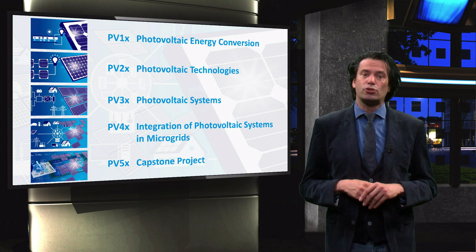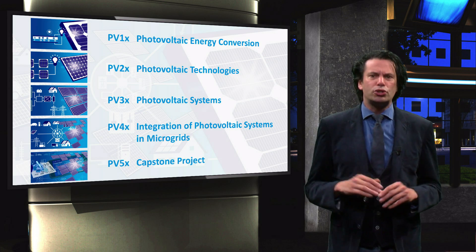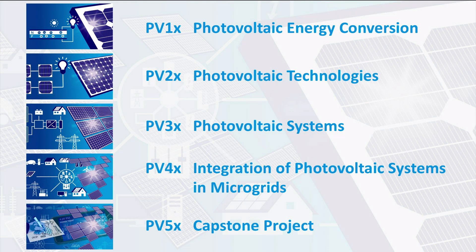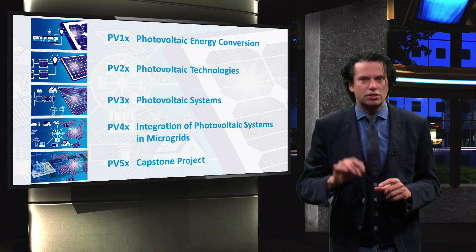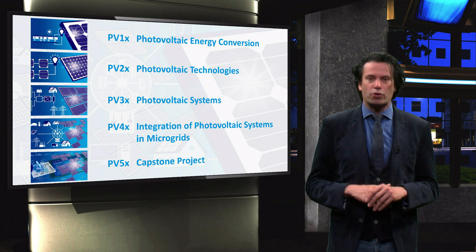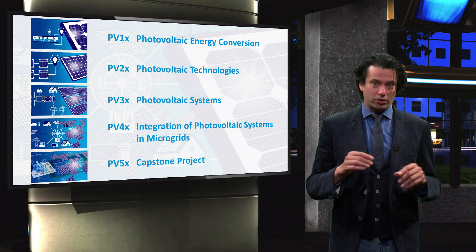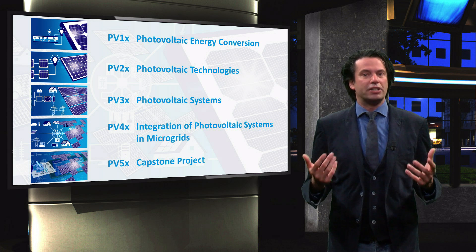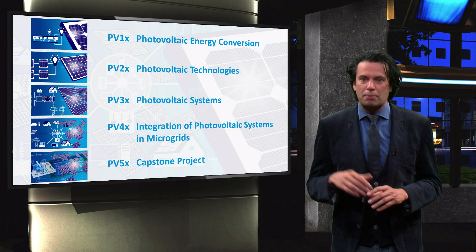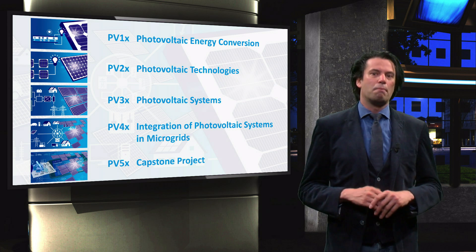The regular course content for PV1x to PV4x is available for free. By upgrading to ID-verified status for one of the courses, you will get access to the proctored exam of that course. If you pass the exam and complete with a sufficient score, you will get a verified certificate of completion for that course. If you complete and successfully earn a verified certificate in all four courses plus the capstone project, you earn the Solar Energy Engineering MicroMasters credential. With this credential, you can apply to the Master of Science program in Sustainable Energy Technology or the Master of Science program in Electrical Engineering in the TRACK Electrical Power Engineering at the Delft University of Technology. You will need to go through the regular admission procedures for Masters students and meet the entry requirements for those MSc programs. If you are admitted, you will be exempted for the courses that are equivalent to the courses you completed in this MicroMasters program.